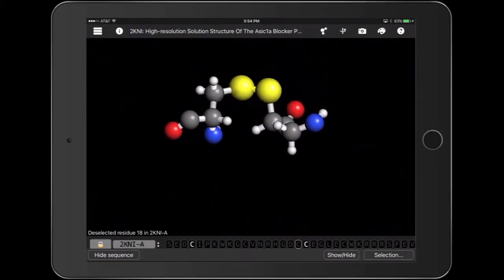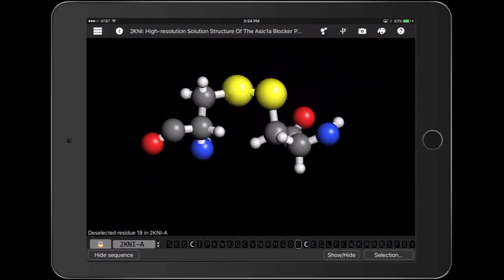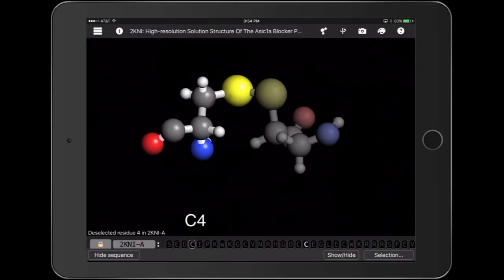Now, I want to know where are these residues in the chain. So, I'm going to touch each of the Cs to see the chain position. I see one is at 4 and the other cysteine is at position 19.